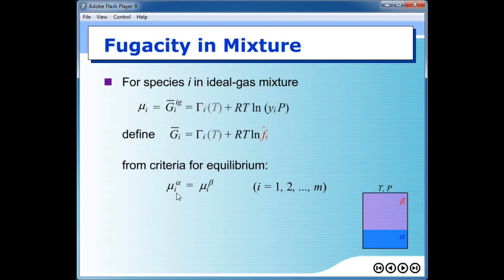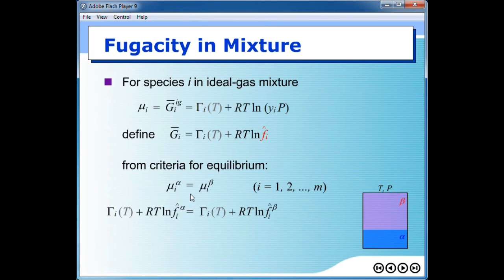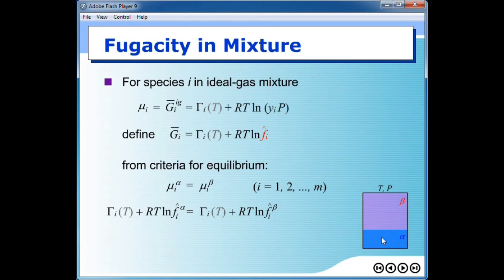We define that the condition for equilibrium requires the chemical potential of species I in both phases to be the same. You calculate chemical potential for all species, and for these two phases, they are supposed to be equal — though chemical potential for species I and species J are not the same. Since chemical potential can be represented by our derived equation, we substitute it in. The gamma_i terms, being functions of temperature, are the same in both phases at equal temperature and cancel out.